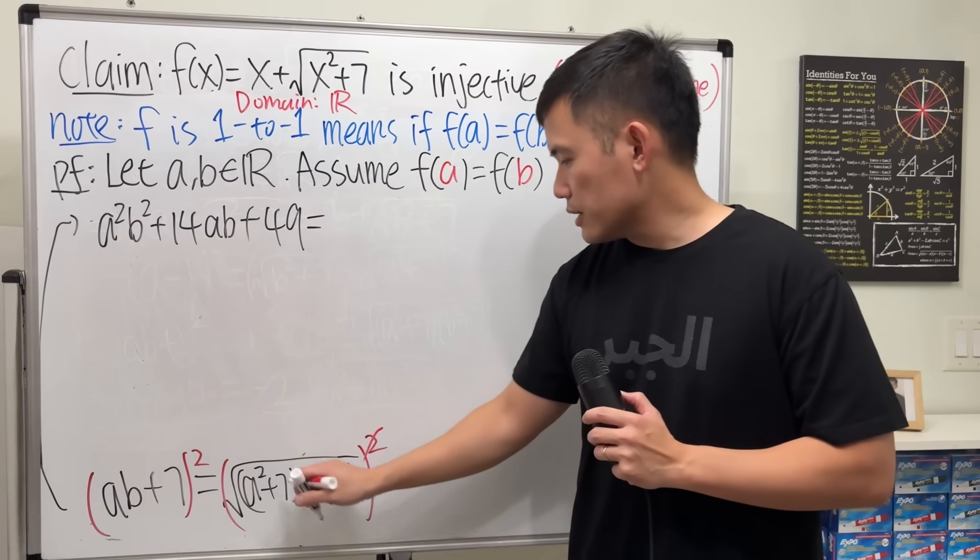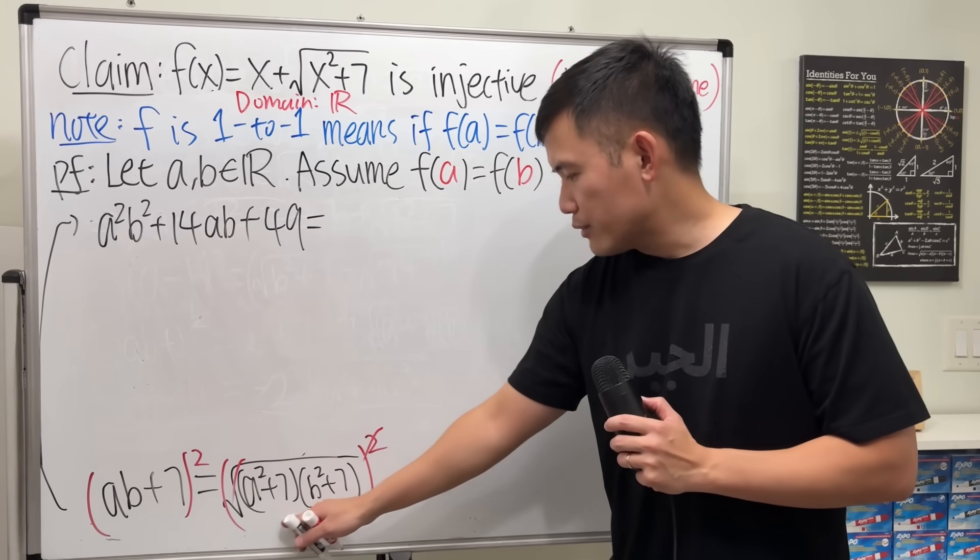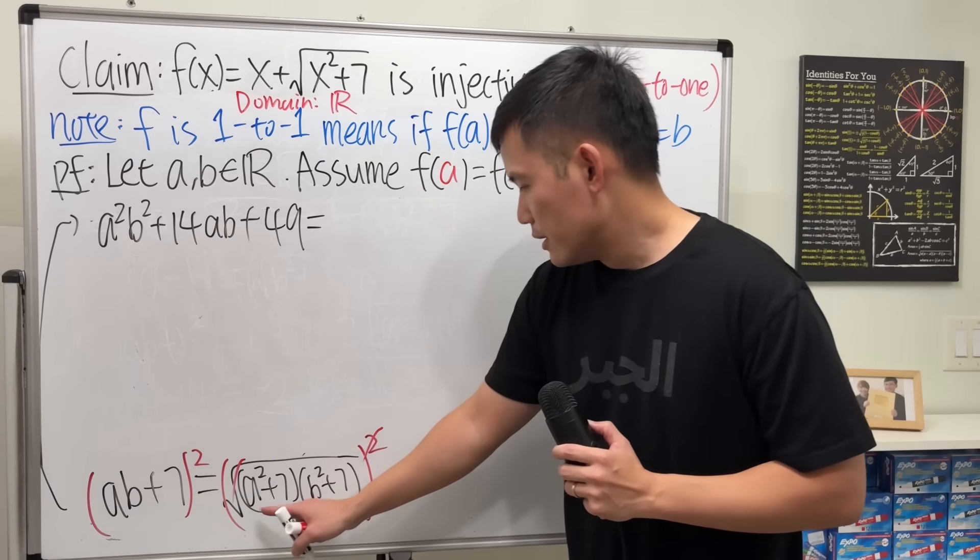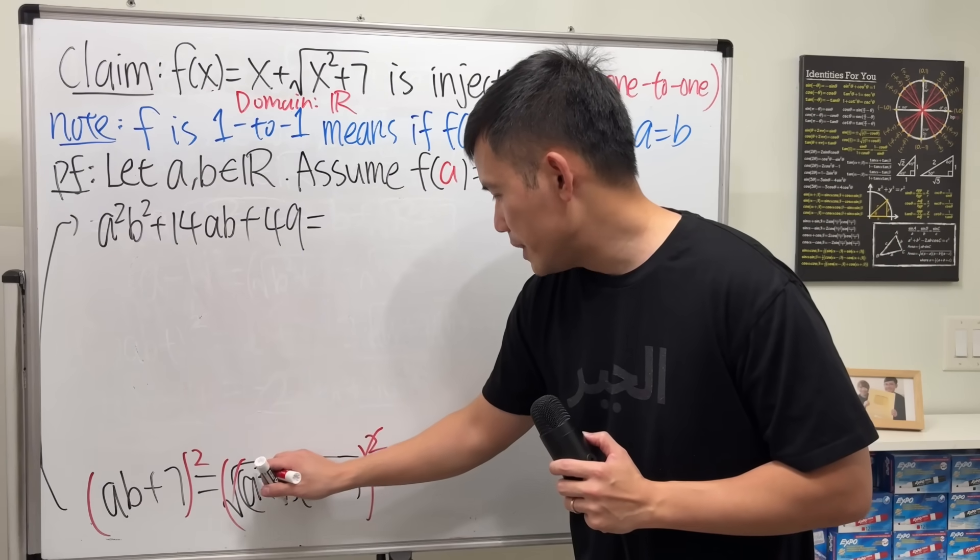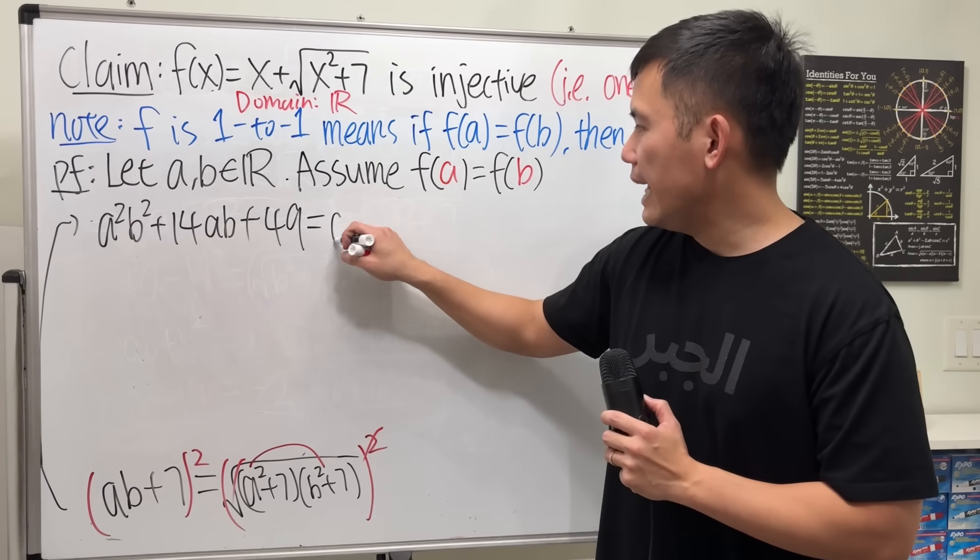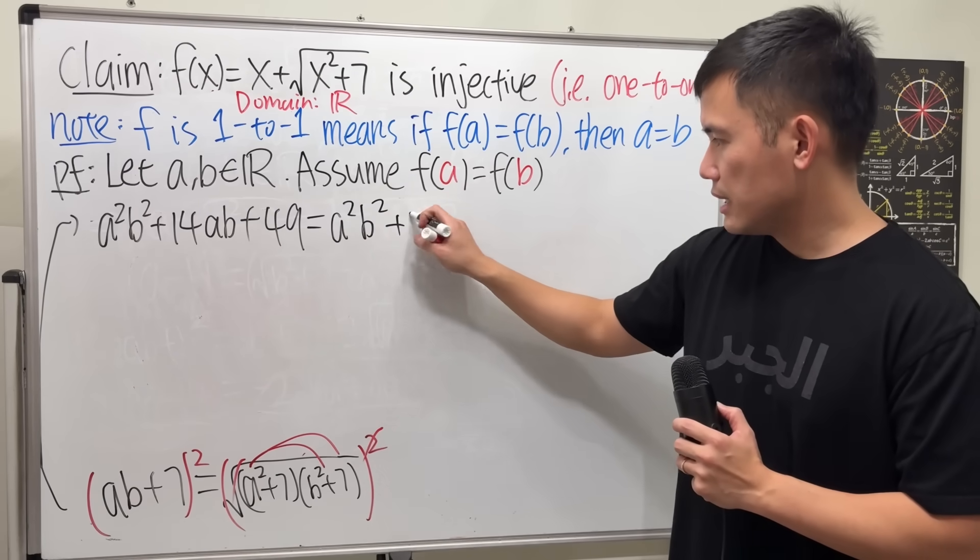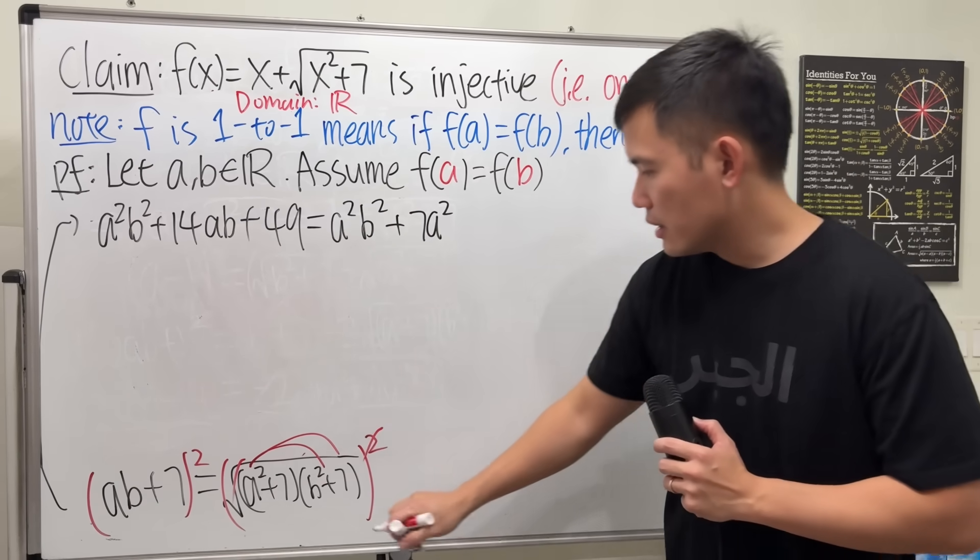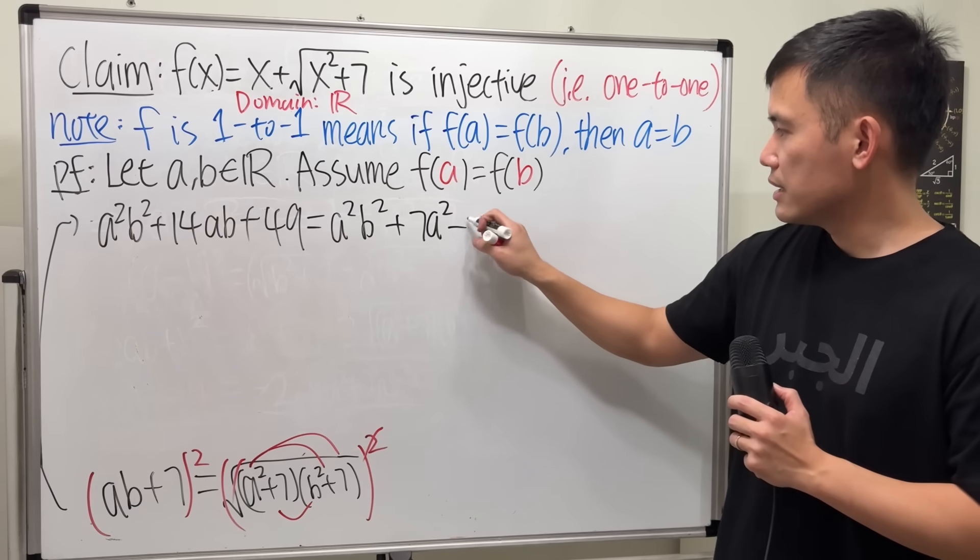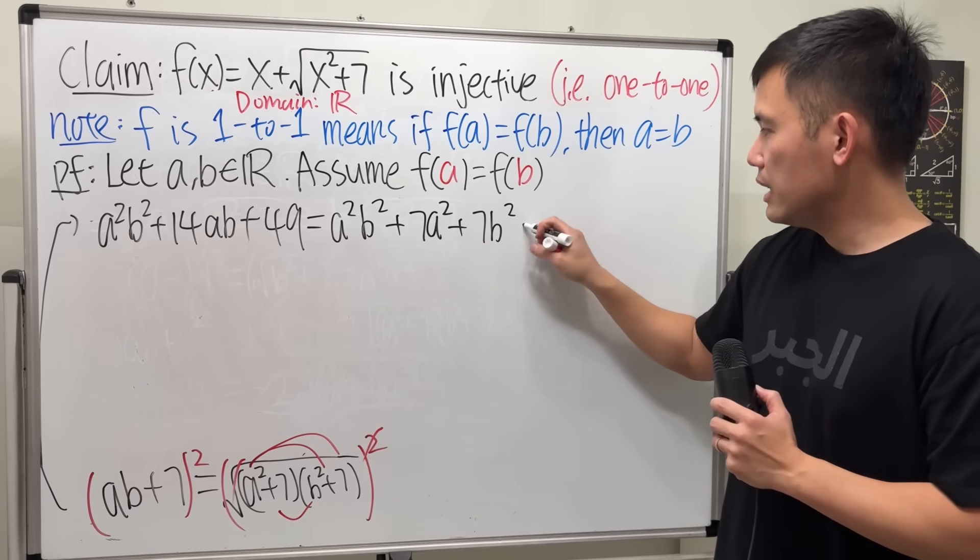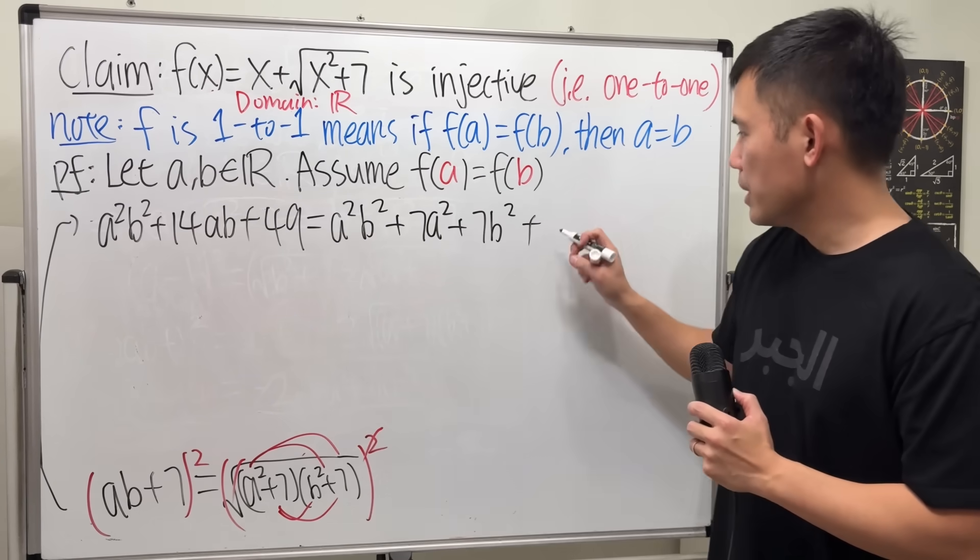Now for this, I can't cancel the square with the square root. I will just have to expand the inside too, right? So, a squared times b squared. That is a squared b squared. And then continue, this times that is plus 7a squared, and then plus 7b squared, and lastly, plus 49.